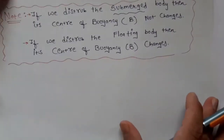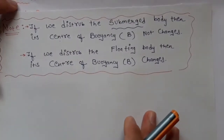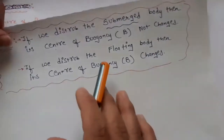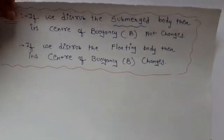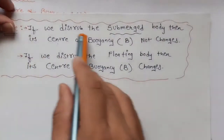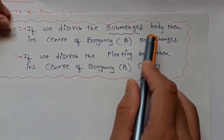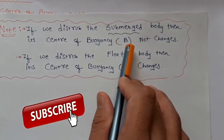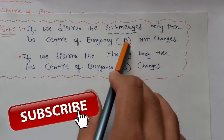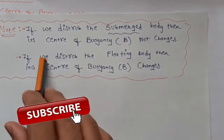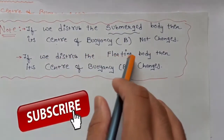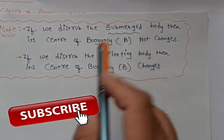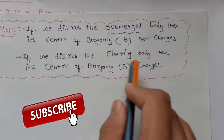If we disturb the submerged body, then its center of buoyancy does not change. But if we disturb the floating body, then its center of buoyancy changes.